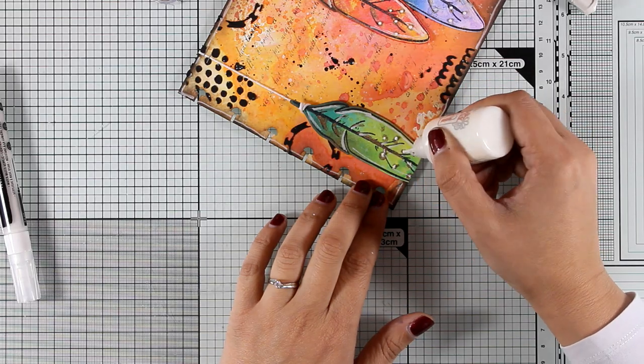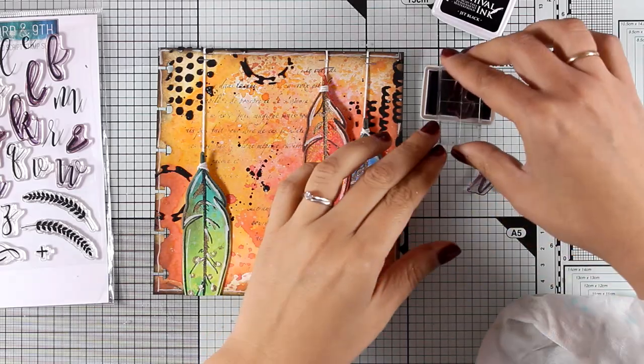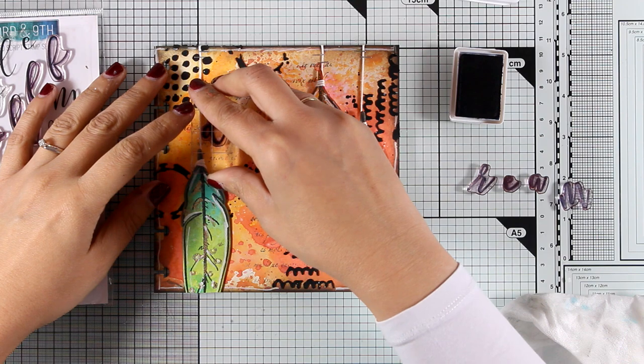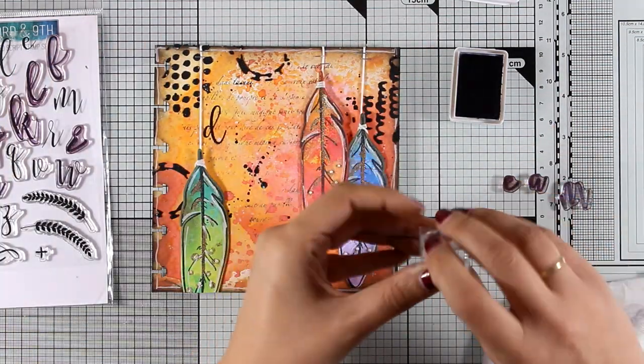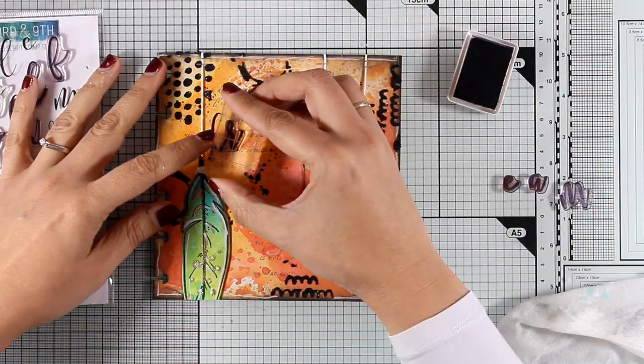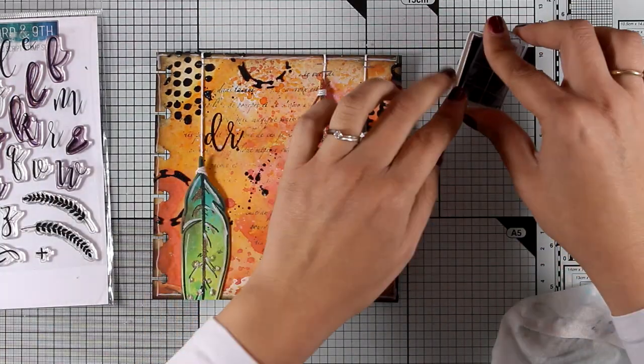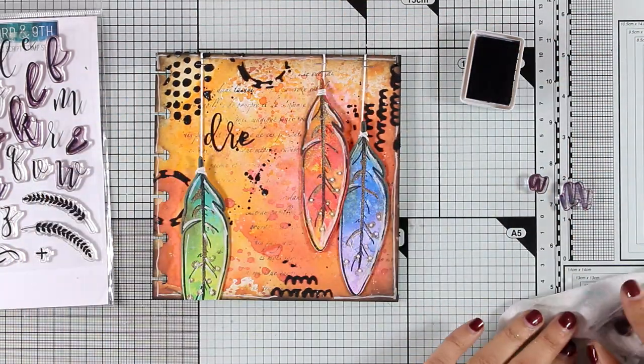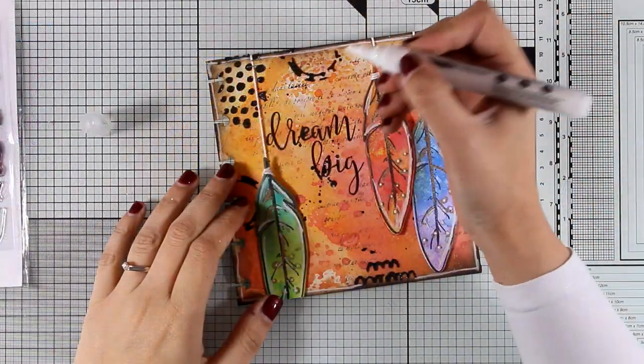Now finally it's time to stamp my sentiment. For that I'm using my Concord & 9th alphabet stamp set and I'm going to stamp 'dream big'. Of course you can use your pens and write down whatever you like. I prefer stamping since I don't like my handwriting. This is the Sophisticated Script stamp set by Concord & 9th. It is on sale right now so check it out. I think it is perfect for each and every one of us who are not happy with our own handwriting.